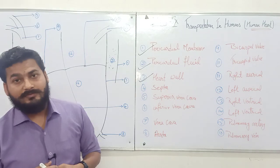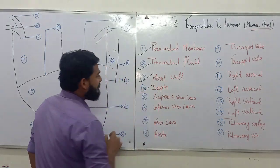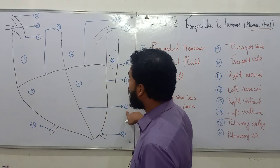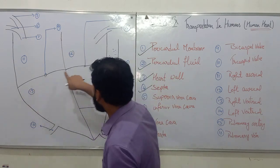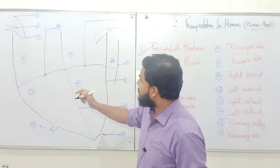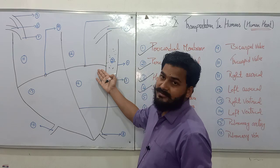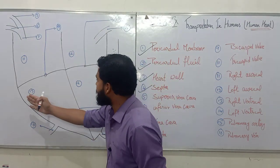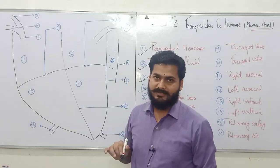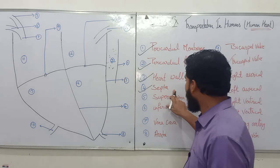Number four is the septa — S-E-P-T-A. There are two types of septa: the vertical septa and the horizontal septa. These run continuously over the margins and divide the heart into four chambers. So this partitioning structure is called the septa.